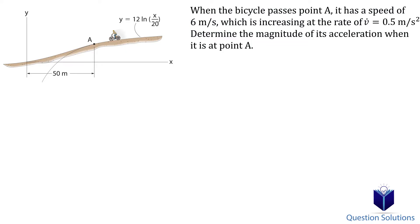In this question, we need to figure out the magnitude of acceleration when the bike is at point A. Since this question gives us an equation for the curve, we will have to use the radius of curvature equation, which means we need the first and second derivative of the equation. So let's start there.